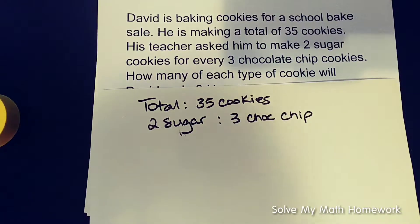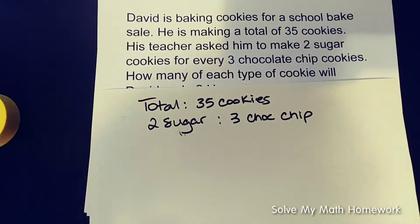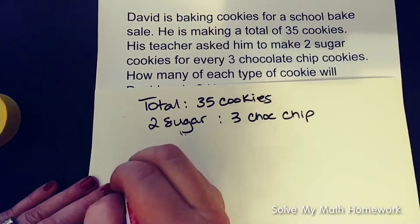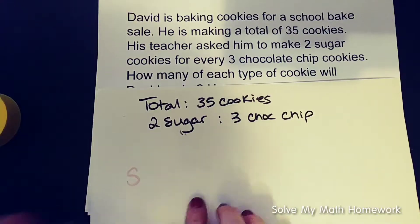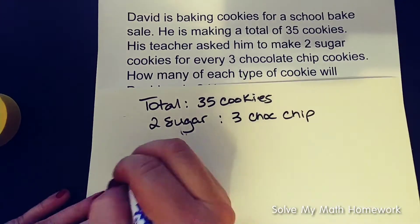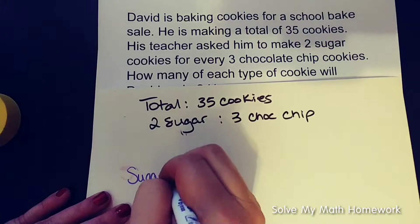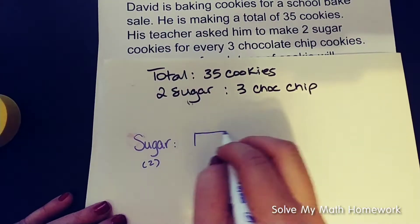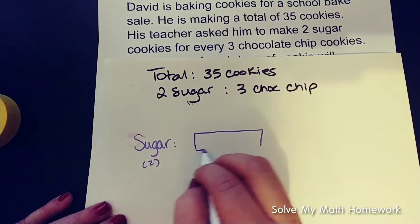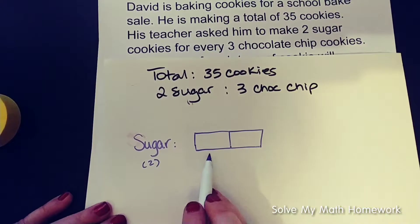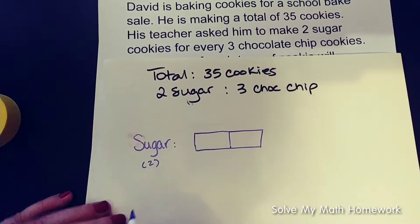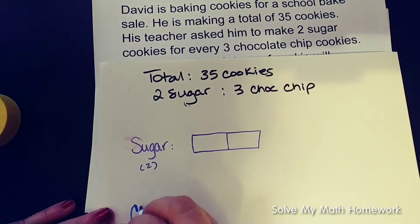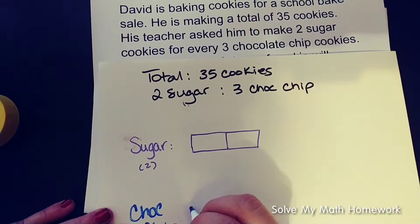What we're going to do is use equal-sized rectangles to represent the portions. So let's talk about sugar cookies. Sugar cookies are going to be in purple, and I'm going to note that there were two for every three. So we're going to use two rectangles to represent the two portions of sugar cookies. And then we'll have three rectangles for our chocolate chip.